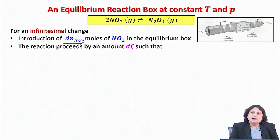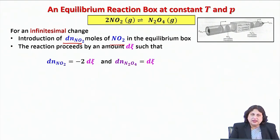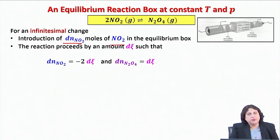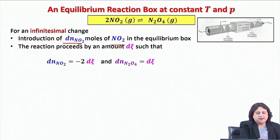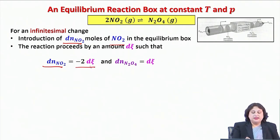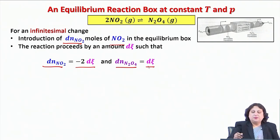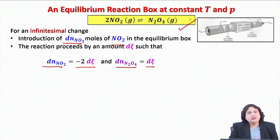I would assume that the reaction would proceed by an amount dξ. Because of this reaction, there will be infinitesimal changes in the number of moles of the reactant as well as the number of moles of the product. I find that dN_NO2 is going to be minus 2dξ and dN_N2O4 is going to be plus dξ, as dictated by the balanced stoichiometric equation, when the reaction proceeds in the forward direction by an amount dξ.